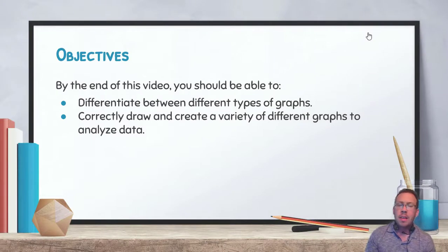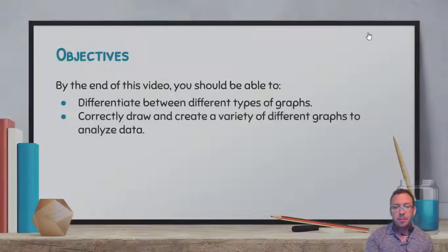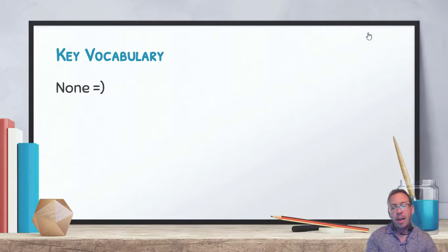By the end of this video you should be able to differentiate between the different types of graphs. You've probably heard of the different types of graphs before: bar graph, line graph, scatter plot, pie chart, those types of things. And then also be able to correctly draw and create a variety of different graphs to analyze data. Different graphs are going to be used for different sets of data, so we need to make sure we know which ones to use at which times.